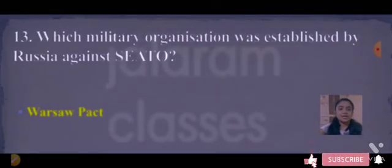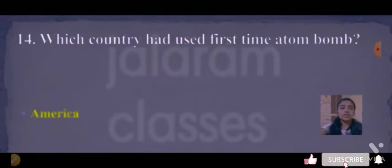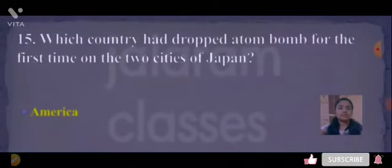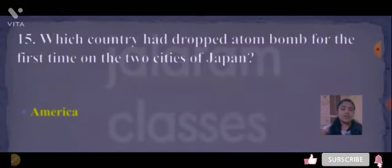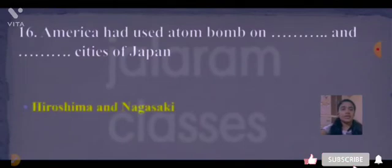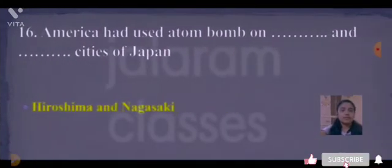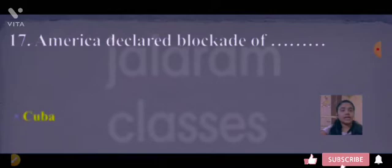Next: which military organization was established by Russia against NATO? Answer is the Warsaw Pact. Next: which country used the atom bomb for the first time? Answer is America. Next: which country dropped the atom bomb for the first time on two cities of Japan? Answer is America. America used the atom bomb on Hiroshima and Nagasaki, cities of Japan. Next: America declared a blockade of blank. Answer is Cuba.